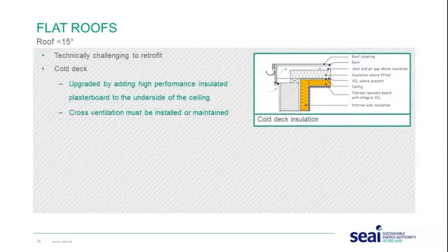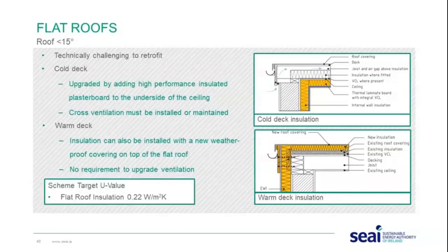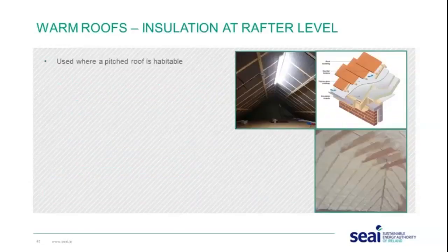There are two flat roof types: cold deck and warm deck. For a cold deck, upgrading is done by adding high-performance insulated plasterboard to the underside of the ceiling, and cross ventilation must be installed or maintained. For a warm deck, insulation can be installed with a new weatherproof covering at the top of the flat roof and no ventilation upgrade is required. The target scheme U-value for flat roofs is 0.22.